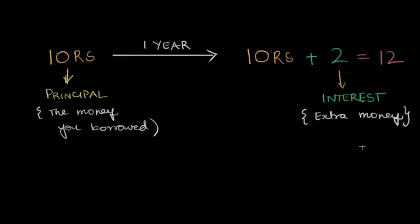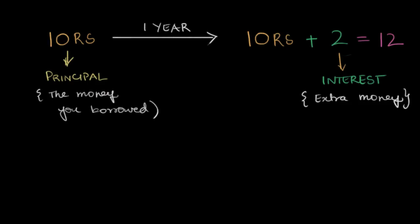So if you add both of them, you'll get the total amount that you should pay. So I'm going to write that over here. The principal plus the interest will give me my total. Total amount, I'm going to call it.